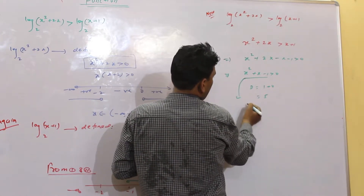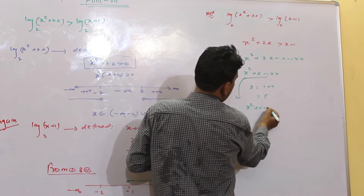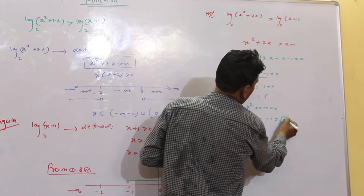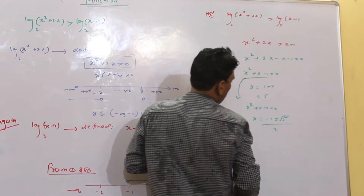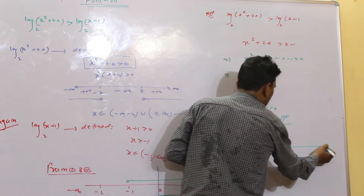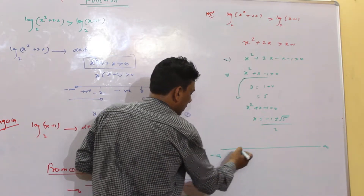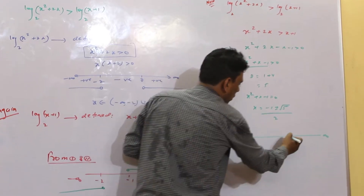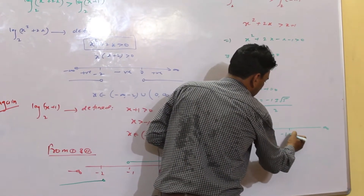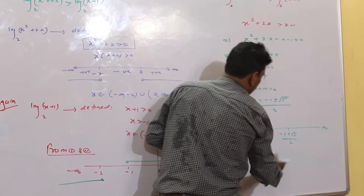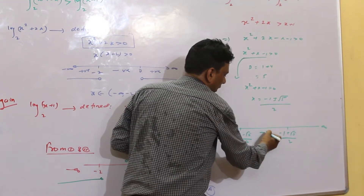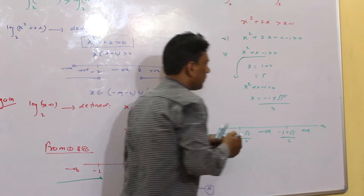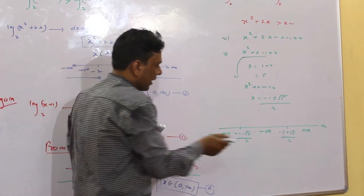x² + x − 1 = 0 से x = (−1 ± √5) / 2. Number line पर इनके roots को plot करेंगे: यहां पर (−1 − √5)/2 और यहां पर (−1 + √5)/2. यहां पर negative, फिर positive, फिर negative - हम positive interval देखना है।